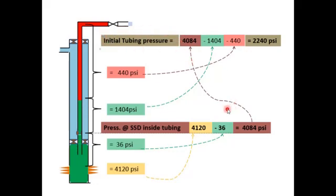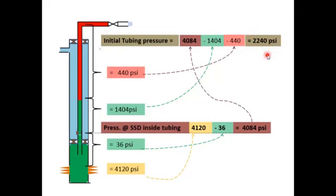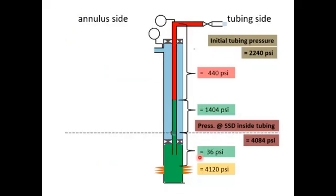We calculate the initial tubing head pressure as: 4,084 psi (pressure at SSD) minus 1,404 psi (hydrostatic pressure of oil) minus 440 psi (hydrostatic pressure of the gas column), giving an initial tubing head pressure of 2,240 psi. Remember, the 200 psi overbalance is already included. We've finished the pressure balance calculation for the tubing side.